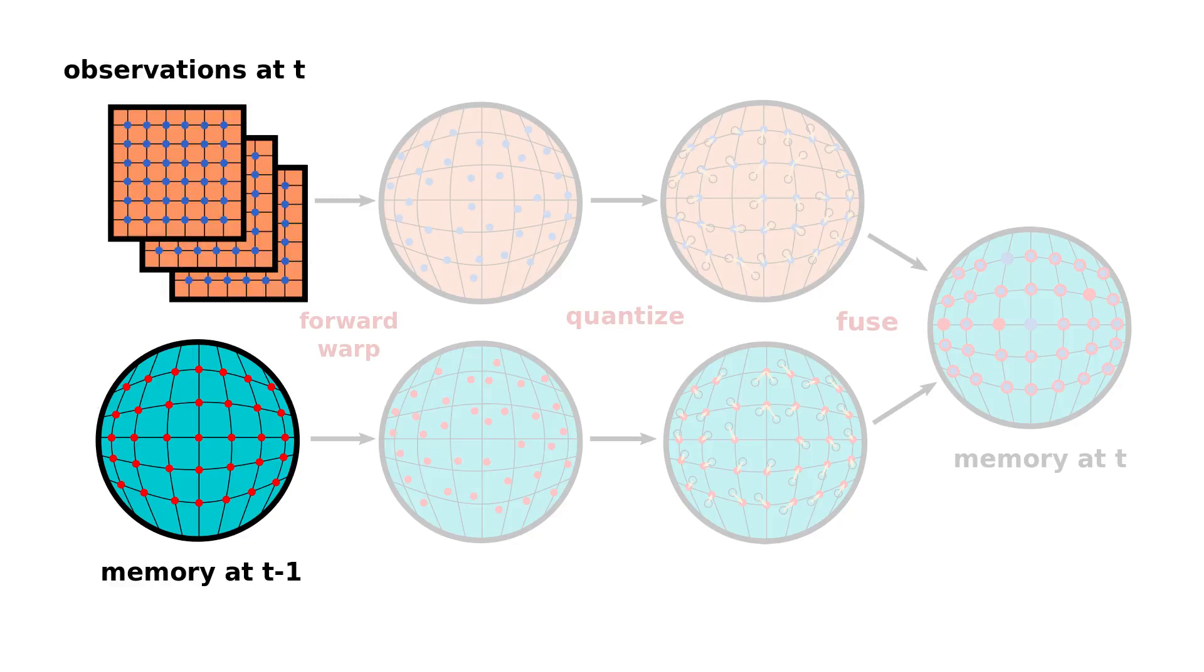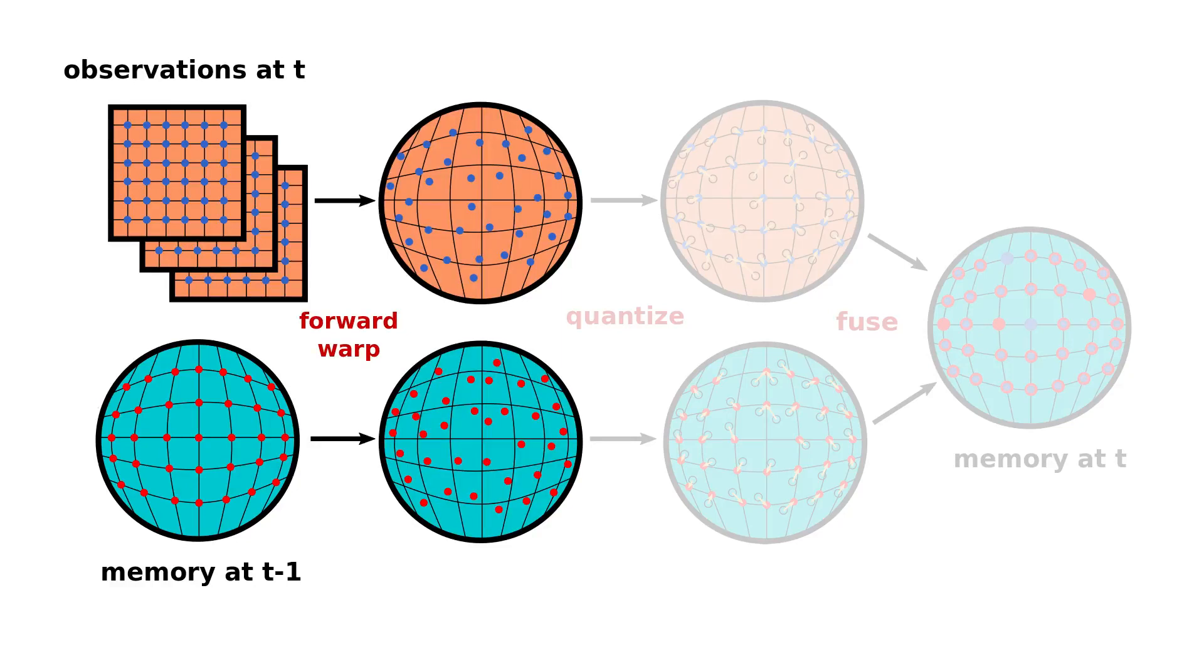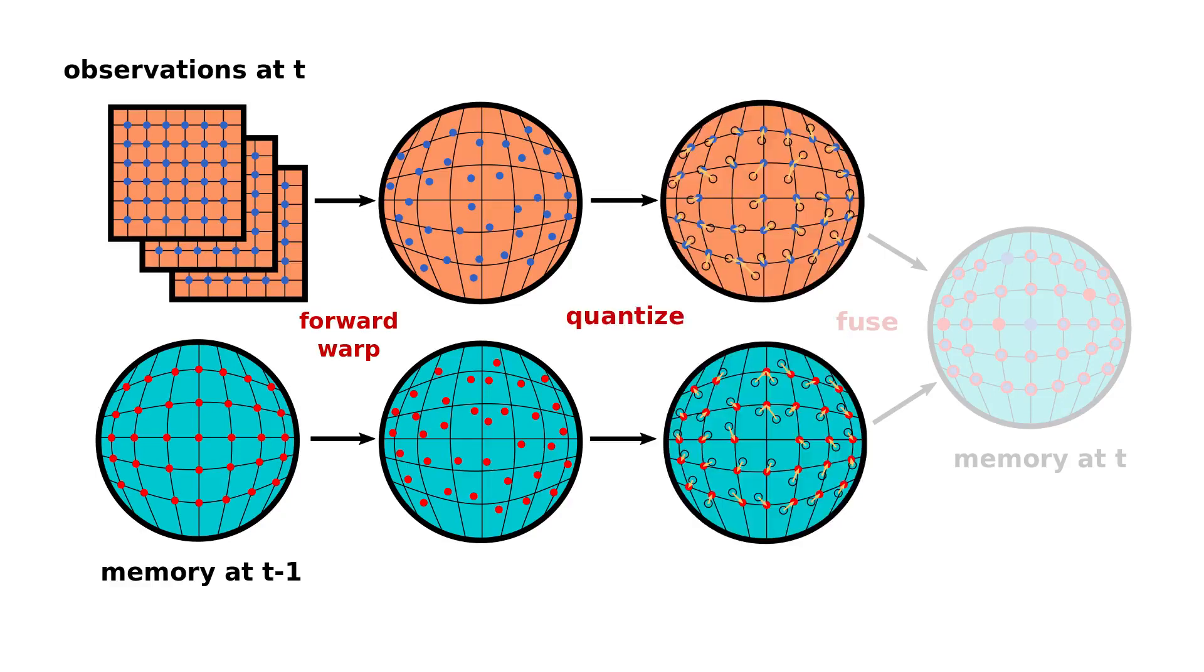Both of these are then forward warped onto the agent egosphere at time t, leading to non-integer polar pixel coordinates. These are then both quantized to integer values, and duplicates are probabilistically fused, provided the depths are close enough. Otherwise, the lowest depth value is taken, which acts as a depth buffer.